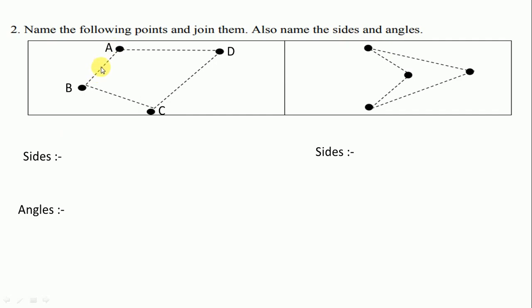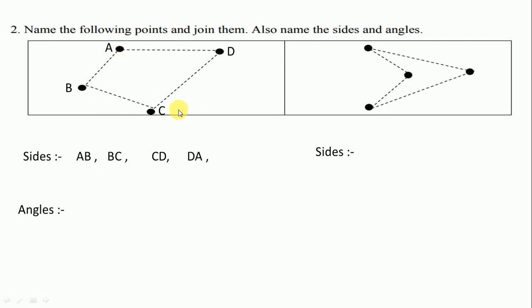We start from this side: AB, next BC, CD, and DA. Angles are A, B, C, D. We write here angle A, B, C, D.